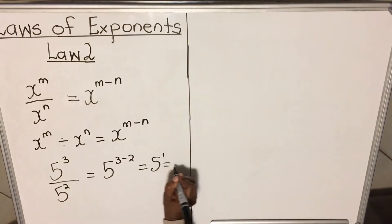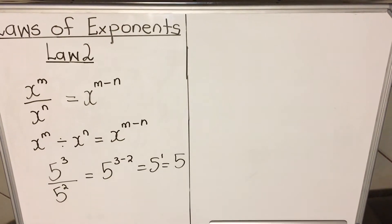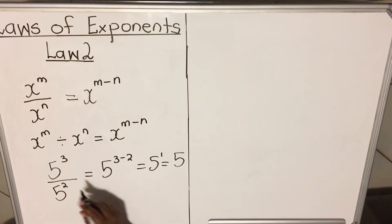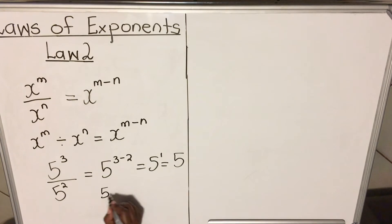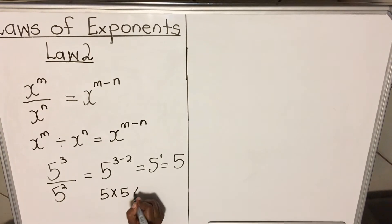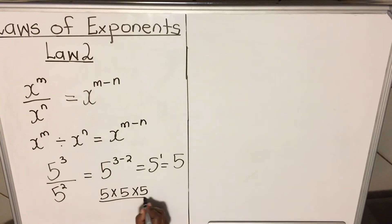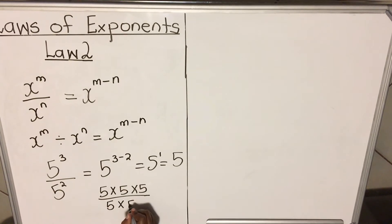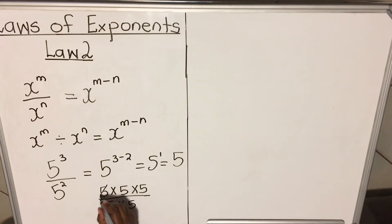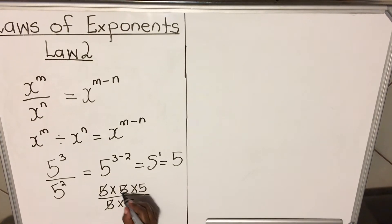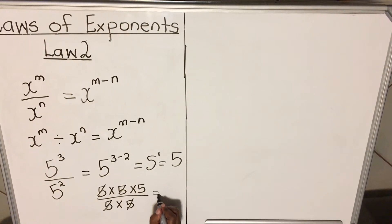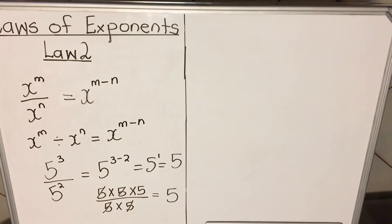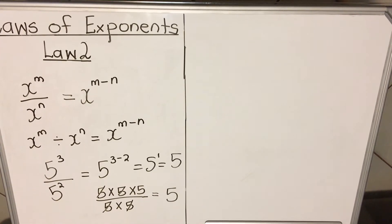Let's split it up and see exactly what happens. Five to the power three is five repeated three times, divided by five to the power two which is five repeated twice. Because you are dividing, you can cancel one five from the top and one from the bottom, and you are left with a five. So the law is correct: when the bases are the same and you are dividing, you subtract the exponents.